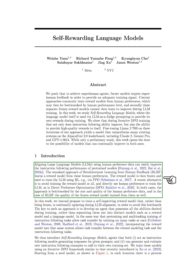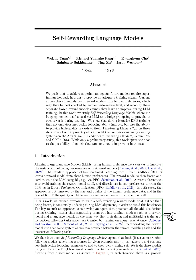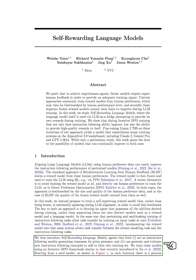In both cases, the effectiveness of the approach is limited by the size and quality of the human preference data, and in the case of RLHF, the quality of the reward model. To overcome this limitation, we propose a new approach: training a self-improving reward model that continually updates during LLM alignment. The idea is to create an agent that has all the desired abilities during training, rather than dividing them into separate models like a reward model and a language model. By integrating the reward model into the same system, we can facilitate task transfer between the reward modeling task and the instruction following tasks. We introduce self-rewarding language models — agents that can both generate responses for given prompts and create and evaluate new instruction following examples to add to their own training set.